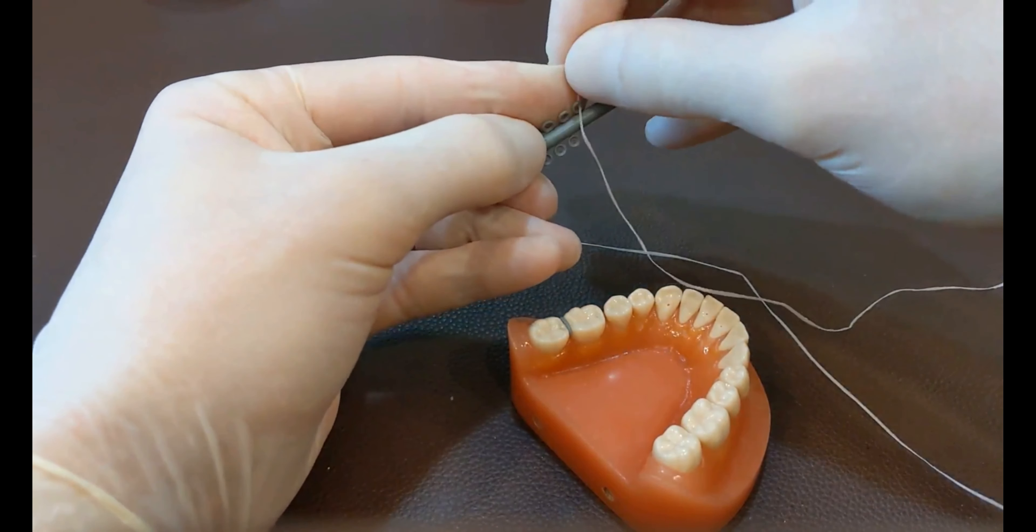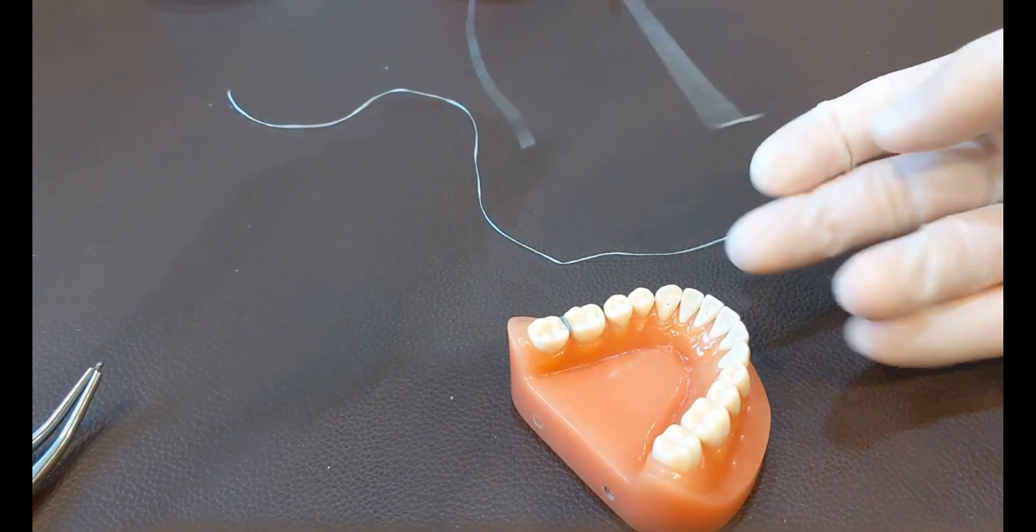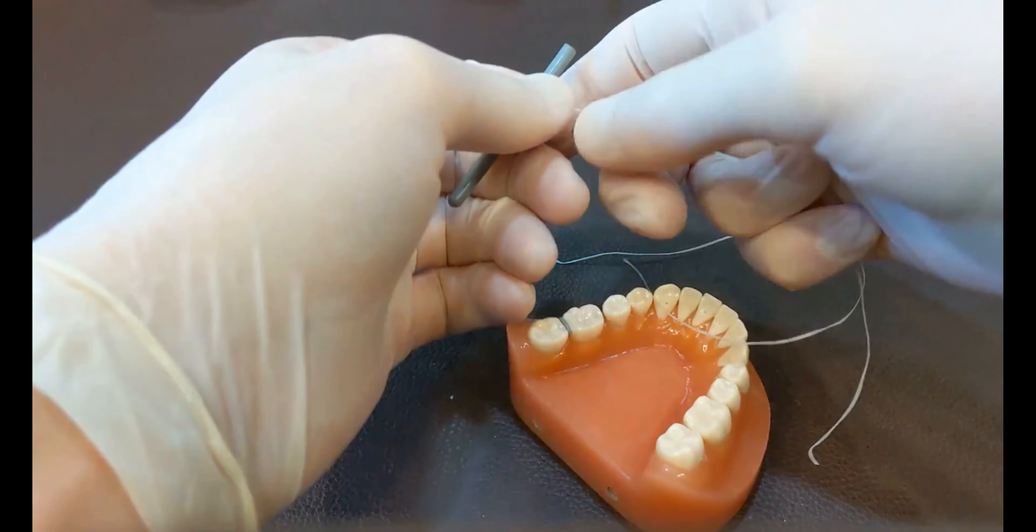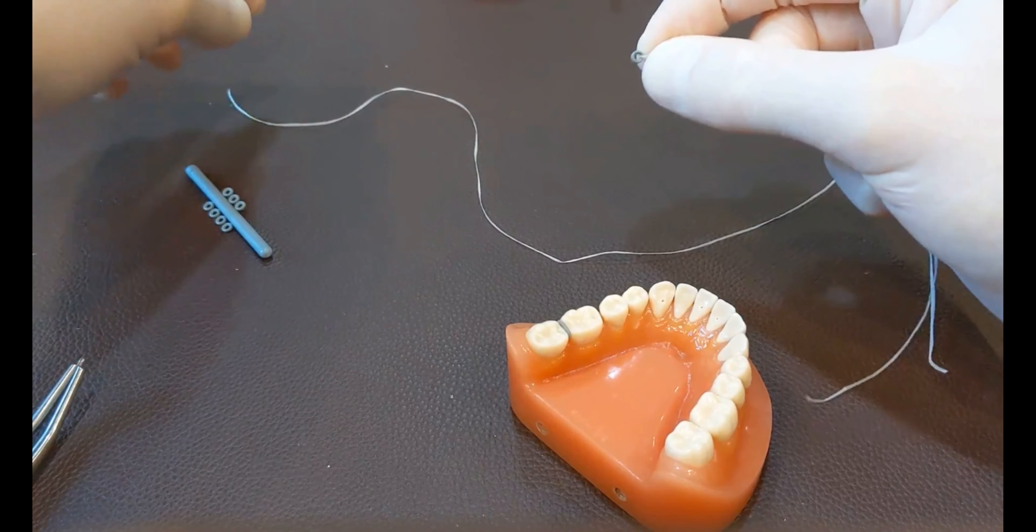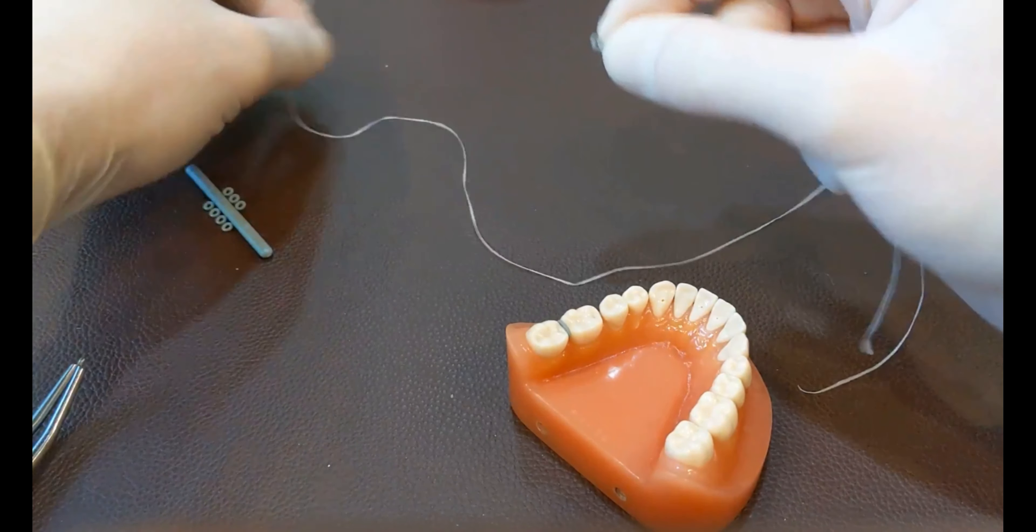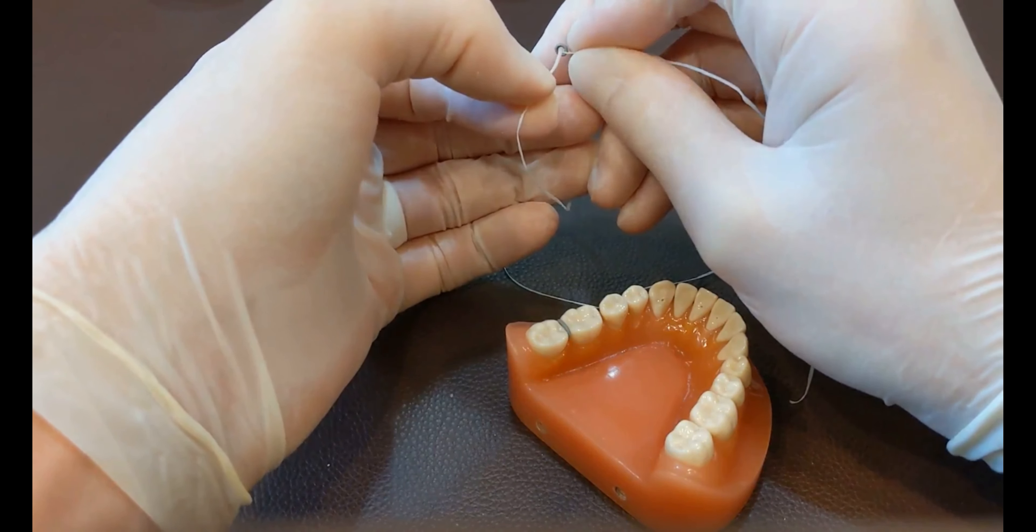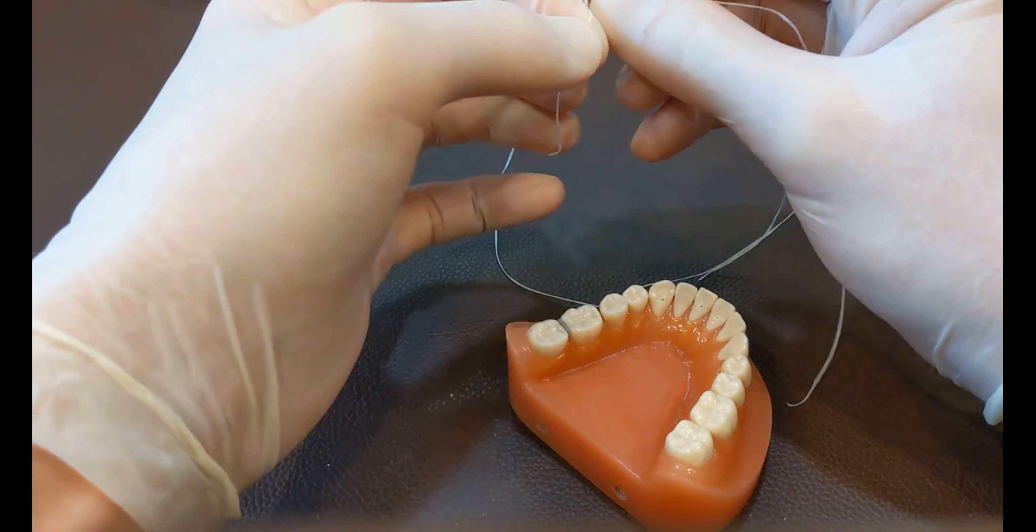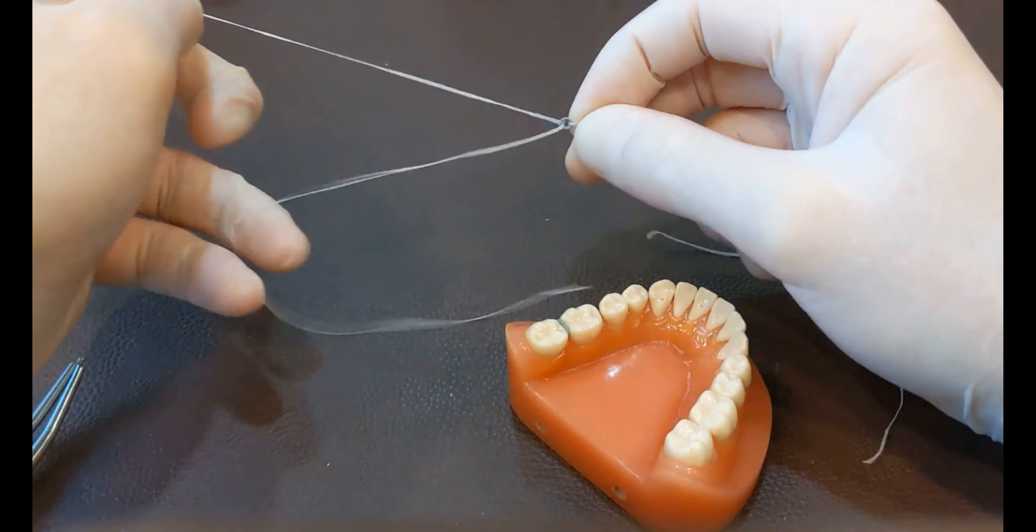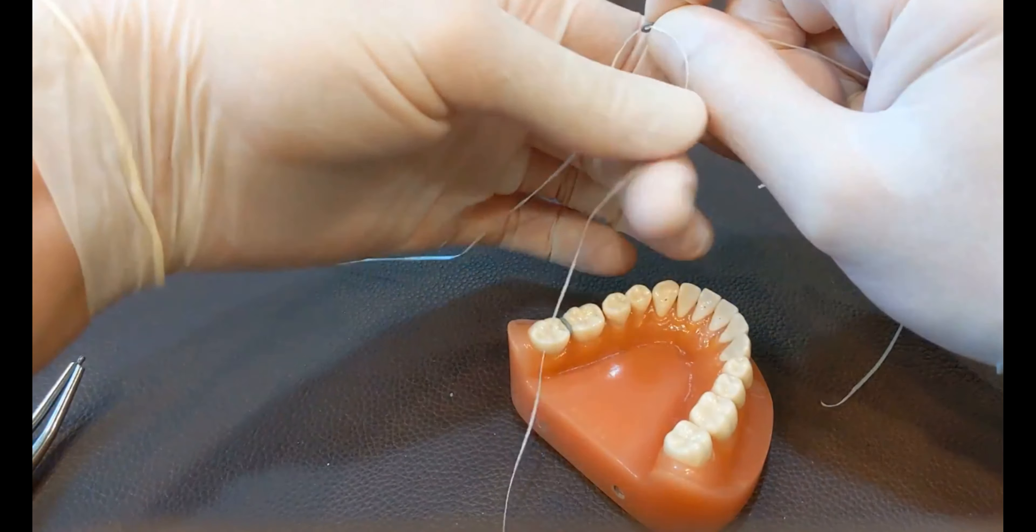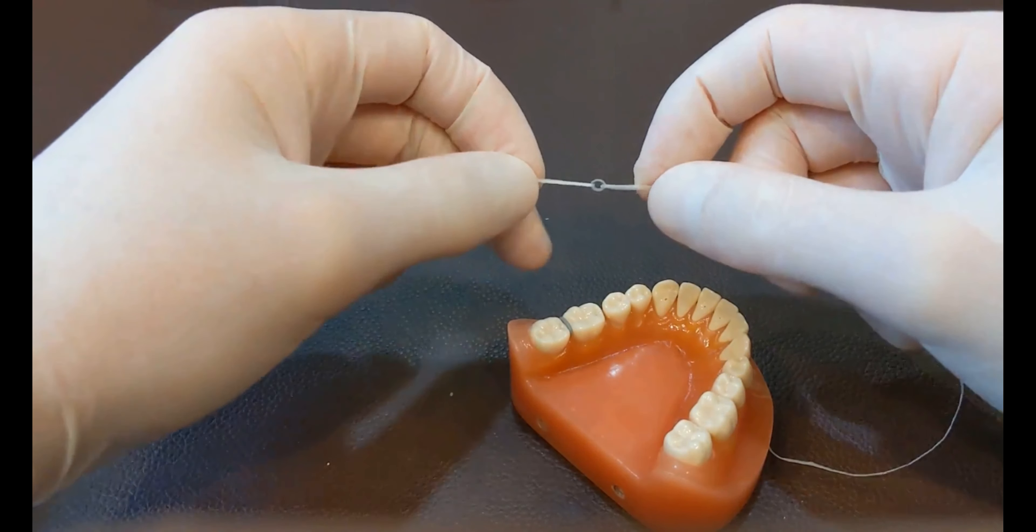So you fit your floss through there, get it about halfway through. You need two pieces of floss about 10 inches long. So you get it through there, and then you just pull it off, and then you hold it like this. And so then you can thread your other piece of floss through there, nice and neat, just like that. And then you grab both halves of that, so you've got it suspended between two pieces of floss like this.